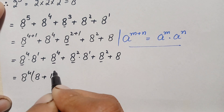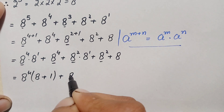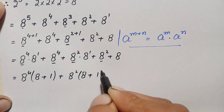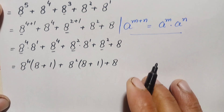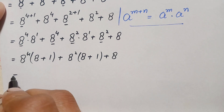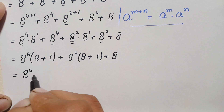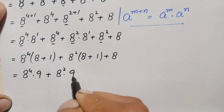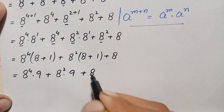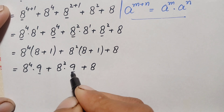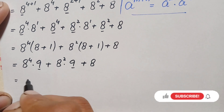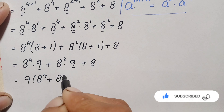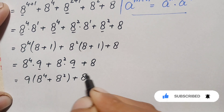We take a raised to power 4 common from the first two terms — leaving a plus 1 inside — and take a squared common from the next two terms — leaving a plus 1 inside — plus a. Since a plus 1 equals 8 plus 1 equals 9, this becomes a raised to power 4 times 9 plus a raised to power 2 times 9 plus a.